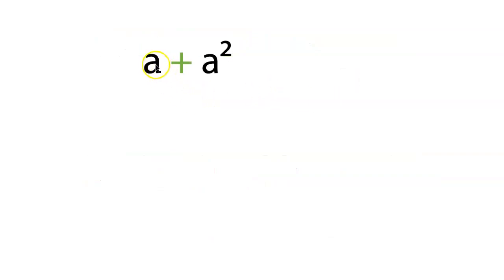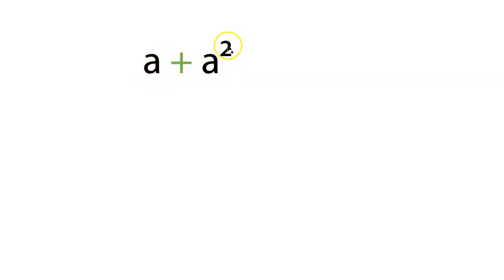Let's say we see something like a plus a squared. These two terms are not the same. In order to have like terms, the base and the exponents both have to be the same. In this case the bases are both a, but the exponents are not the same. This exponent is a 2, and this exponent — as you know — if I asked you how to write a in exponent form, you'd say a to the power of 1. a to the power of 1 is not the same as a to the power of 2.